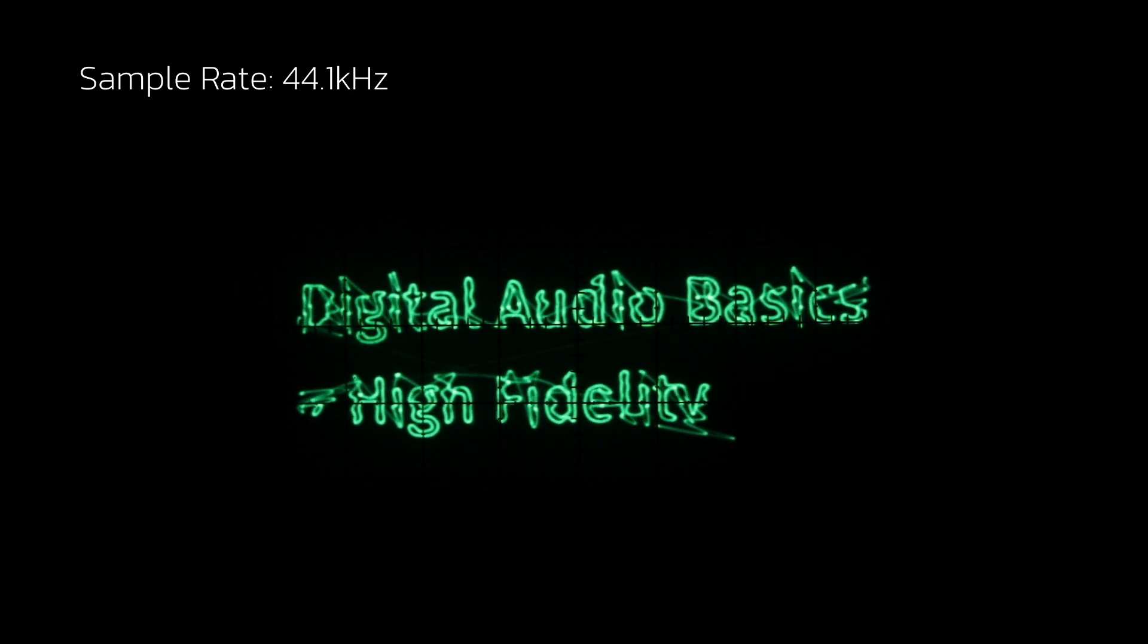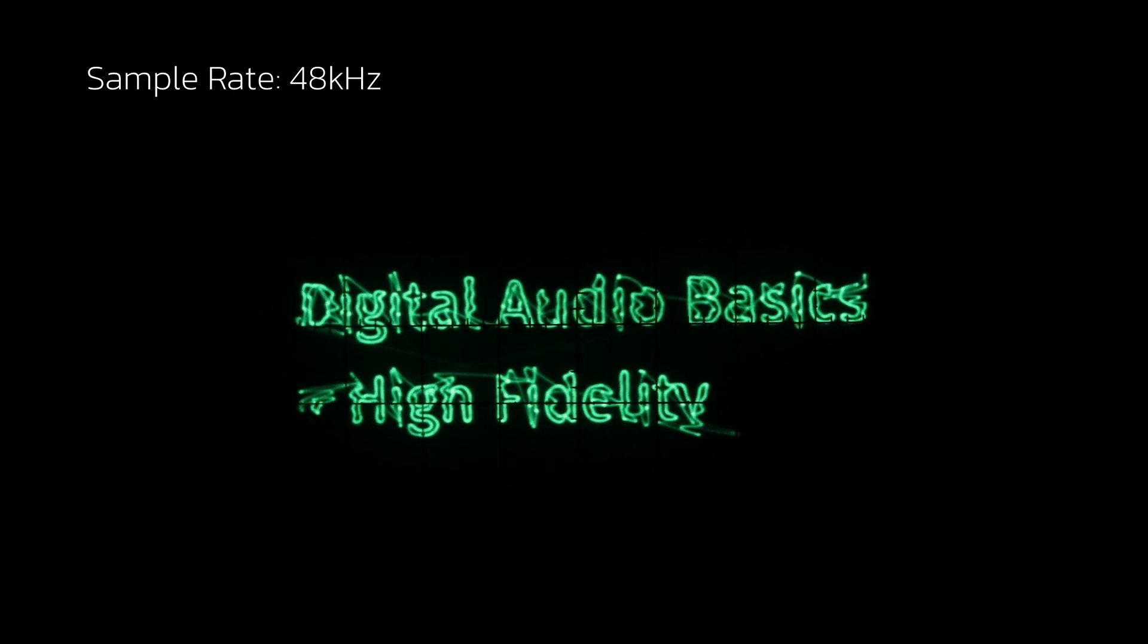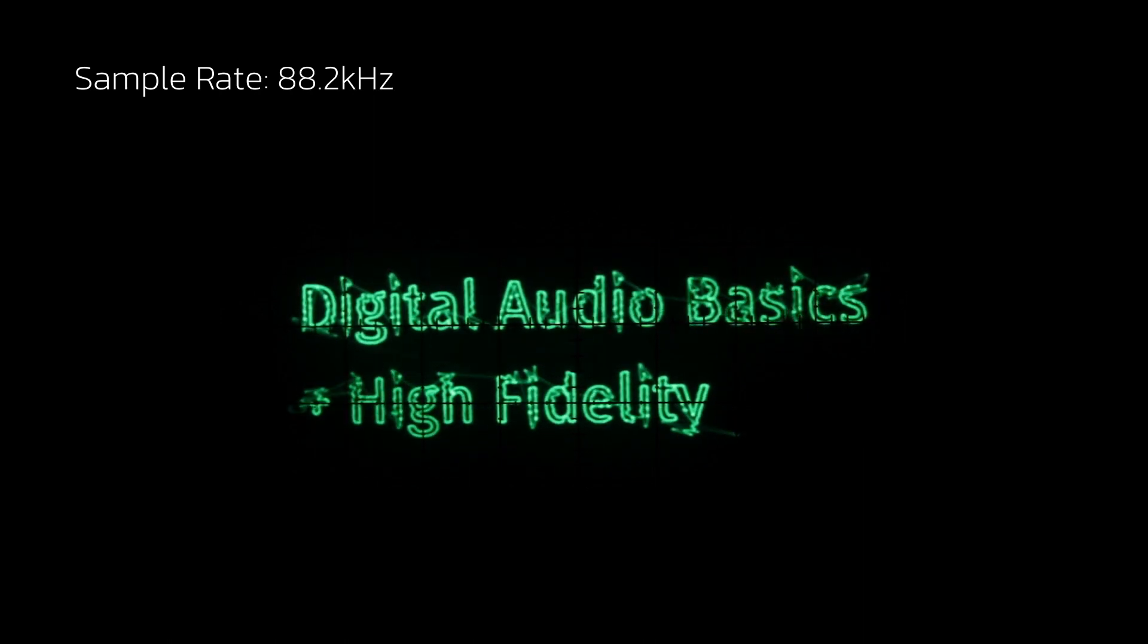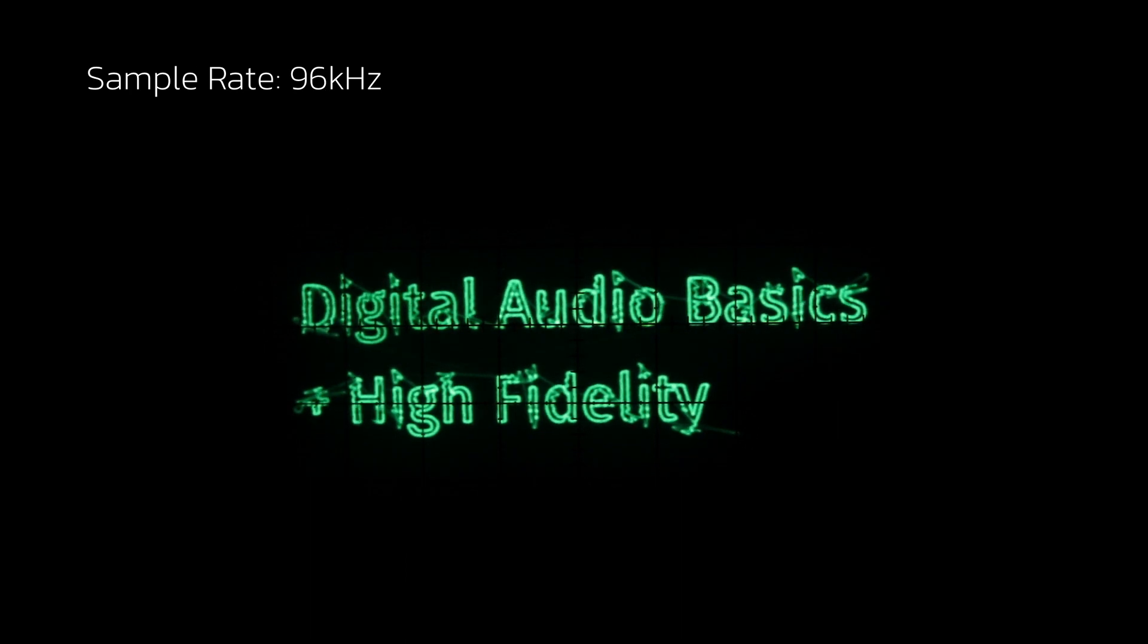Now that we know a little bit more about the particulars of digital audio, let's take a look at that piece of text I was drawing on the screen. We can read it all right, but it doesn't look that great. Let's keep cranking the sampling rate. Here's 48, 88.2, 96, 176.4, and finally 192 kHz.